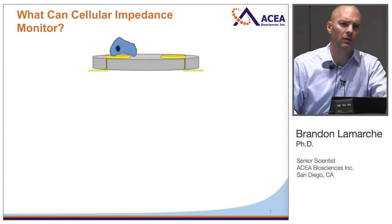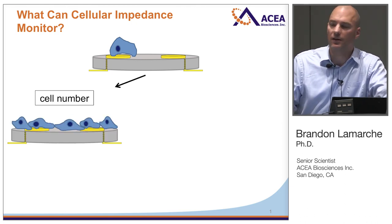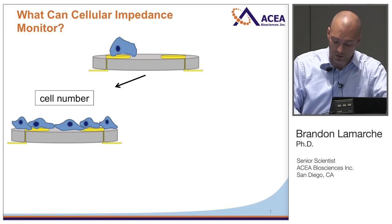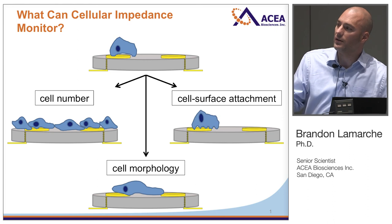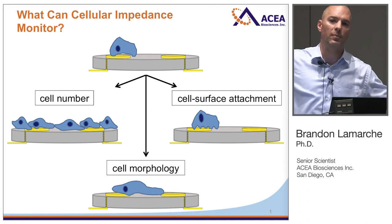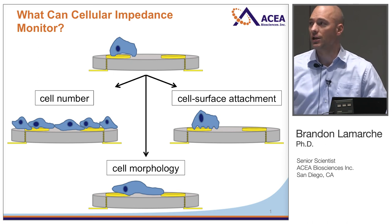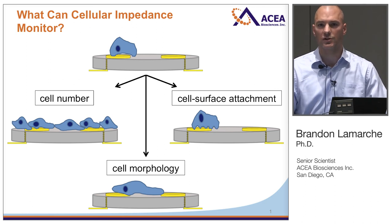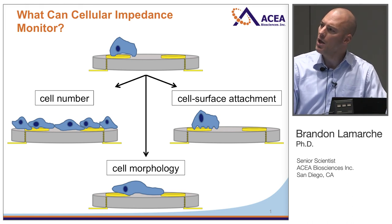What can you actually do with Excelligence? First, you can monitor changes in cell number — total surface area coverage is easily tracked. You can also look at changes in morphology or changes in how tightly the cell is interacting with the plate bottom. A huge amount of biology is encompassed by those three things: ligand stimulation resulting in cytoskeletal changes on the order of minutes, screening cytotoxic drugs — literally dozens of assays are available.